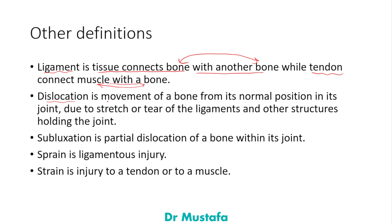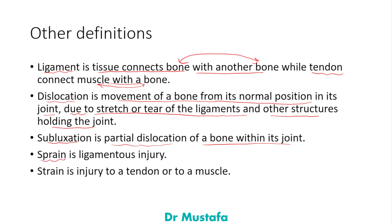Dislocation is the movement of a bone from its normal position in its joint, due to stretching or tearing of the ligaments and other structures holding the joint. Subluxation is a partial type of dislocation of a bone within its joint. A sprain is a ligamentous injury, while a strain is an injury to a tendon or muscle.